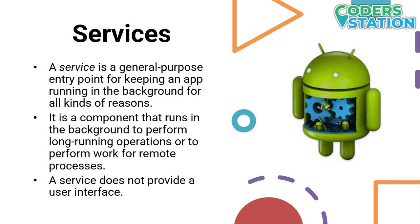The next component is Services. A service is a general purpose entry point for keeping an app running in the background for all kinds of reasons. It is a component that runs in the background to perform long-running operations or to perform work for remote processes. A service does not provide a user interface. For example, a service might play music in the background while the user is in a different app, or it might fetch data over the network without blocking user interaction. Another component such as an activity can start the service and let it run or bind to it in order to interact with it.